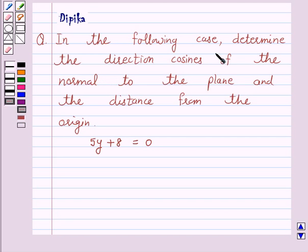In the following case, determine the direction cosines of the normal to the plane and the distance from the origin. 5y plus 8 is equal to 0. So let's start the solution.